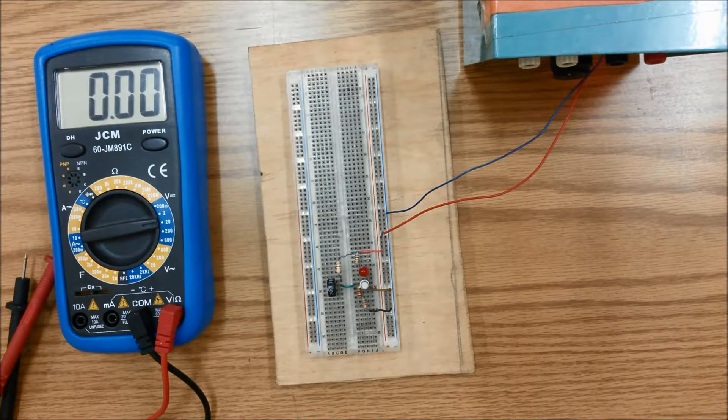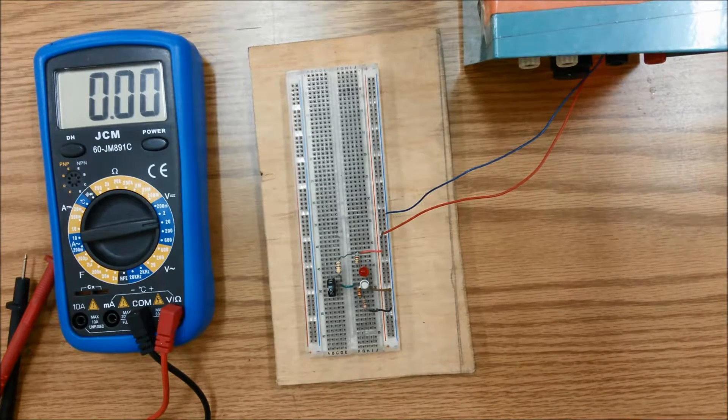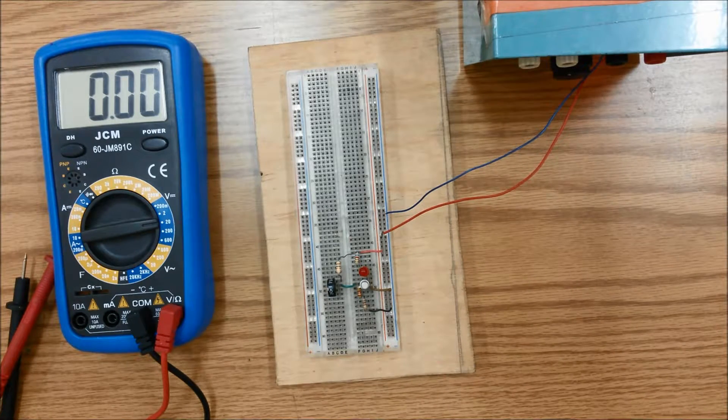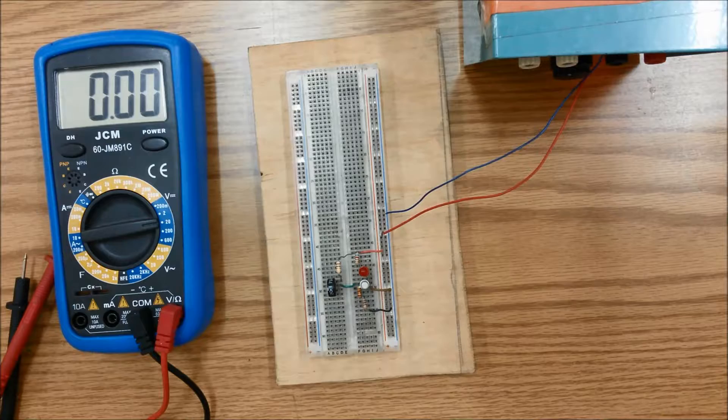So as it is now the current at the base is approximately 0, which means that the current at the collector would also be 0 or be close to 0 as possible.